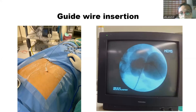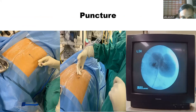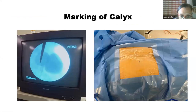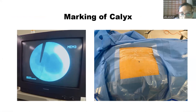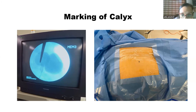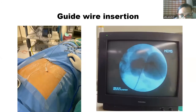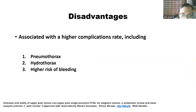Returning to the triangulation technique: first you decide whether you want to do a supracostal or infracostal puncture. You place a needle on the desired calyx after retrograde filling with contrast. In this system, the infracostal puncture is preferred, and then you place the needle inside the system.